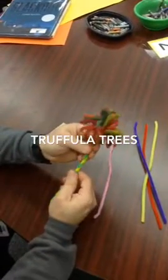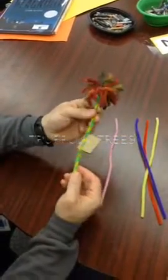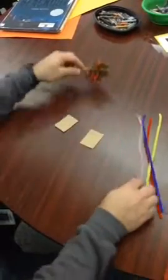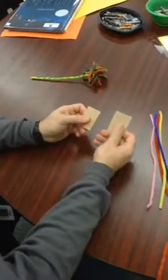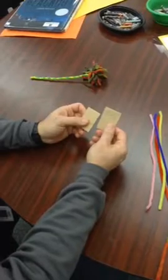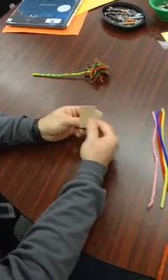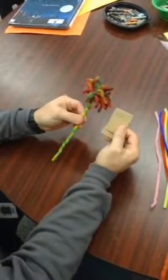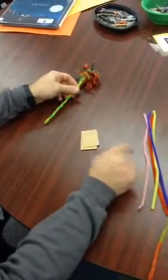Hey, I'm going to show you how to make a truffle tree with pipe cleaners and some yarn. You're going to need cardboard that is one and a half by two inches to make the pom-pom part of the truffle tree and you will need two pipe cleaners.